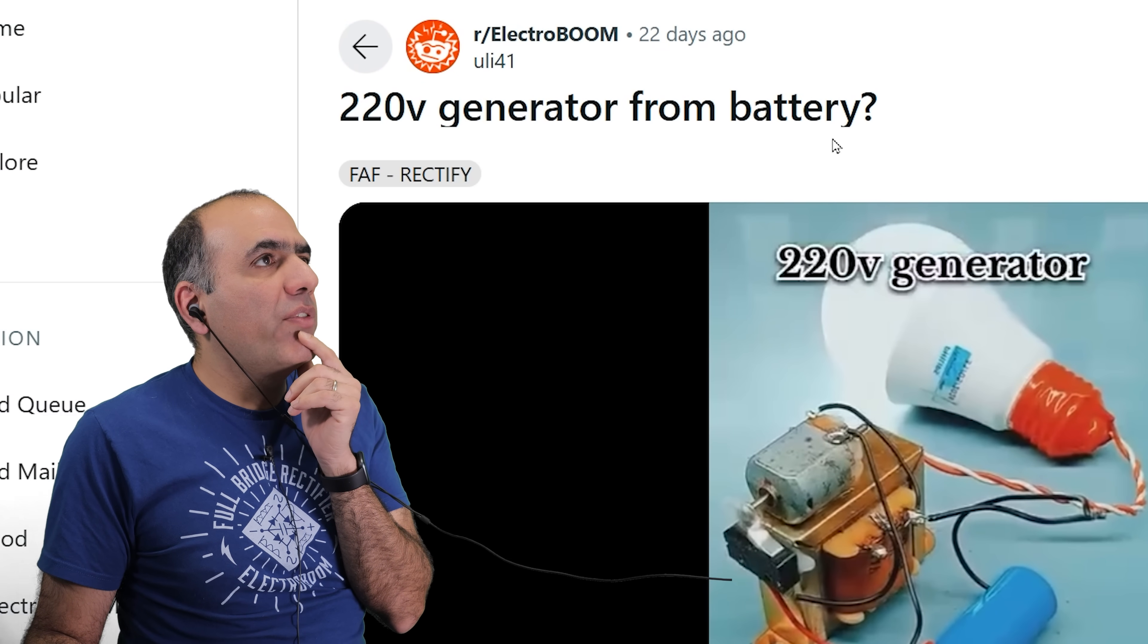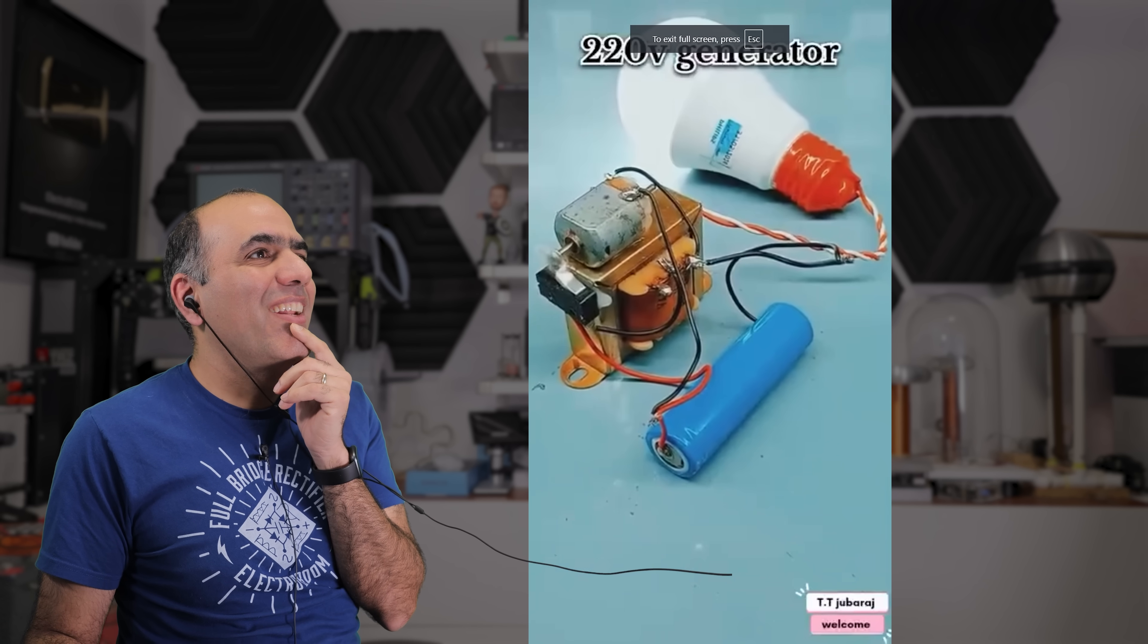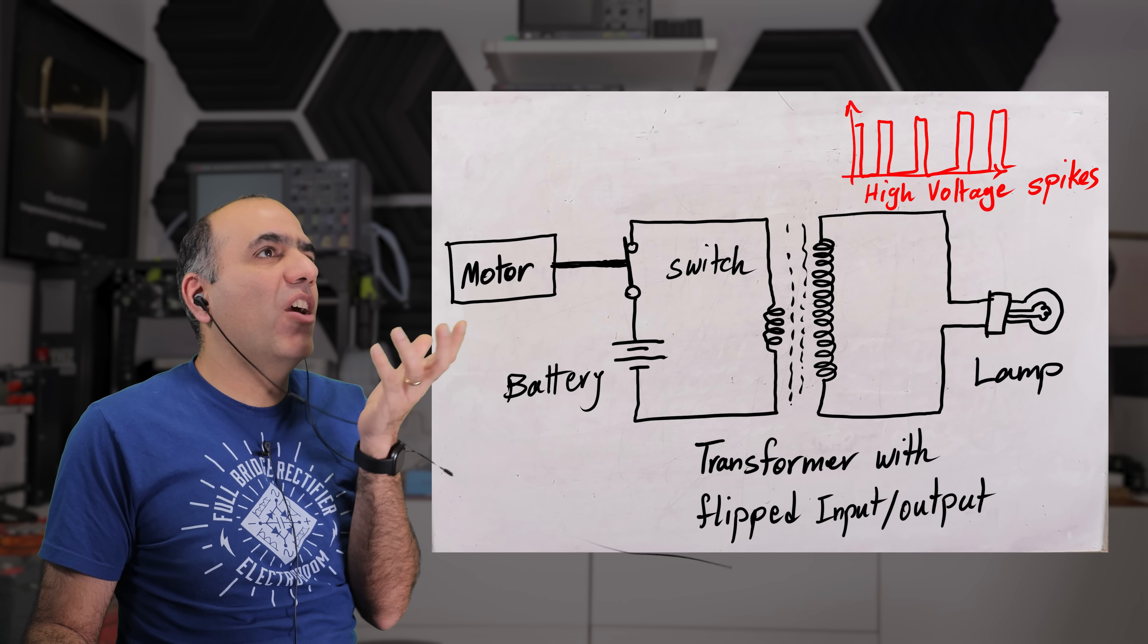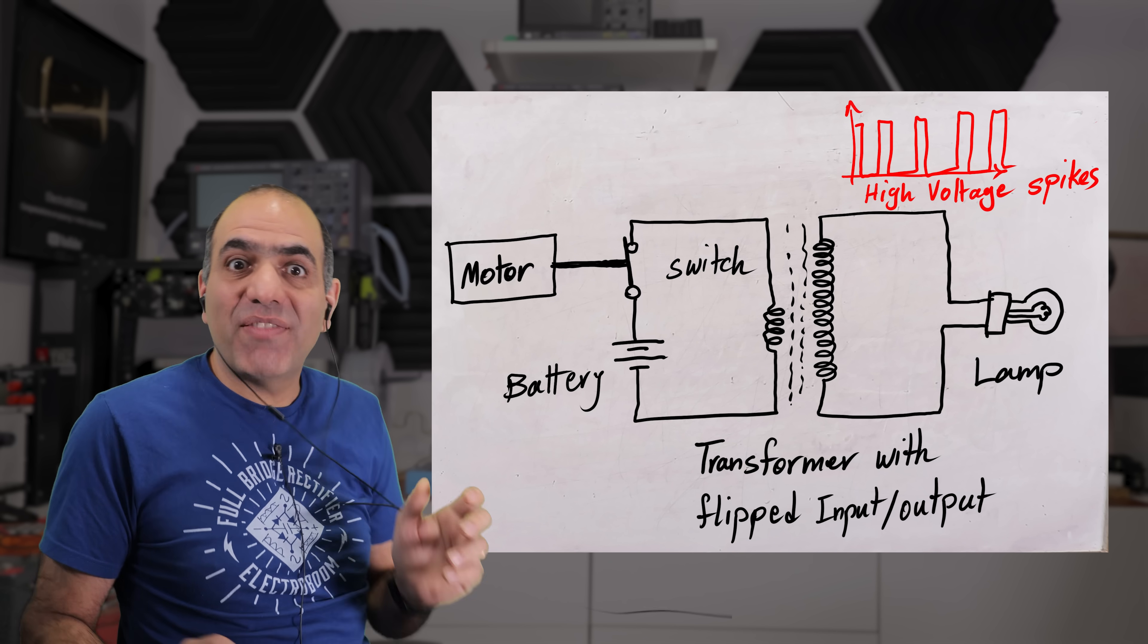220 volt generator from battery. That's cute. He's switching a battery over some transformer to generate high voltage. Maybe I should give that a try.